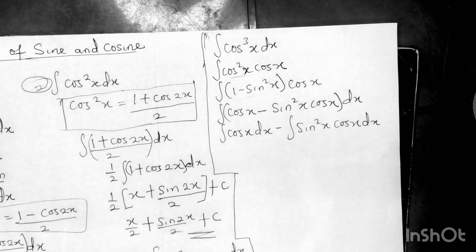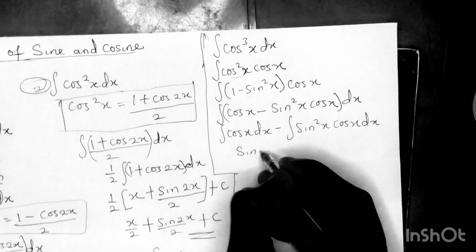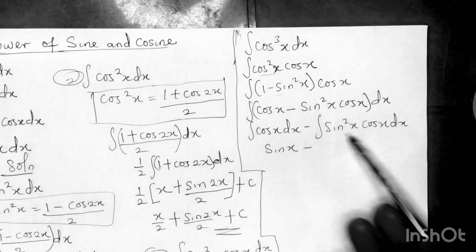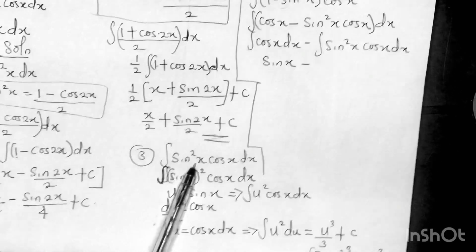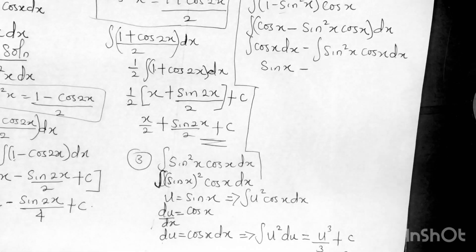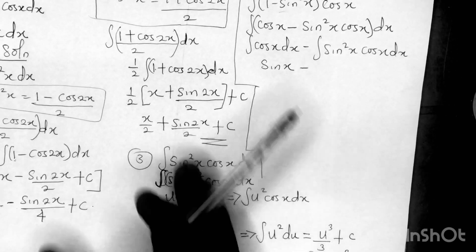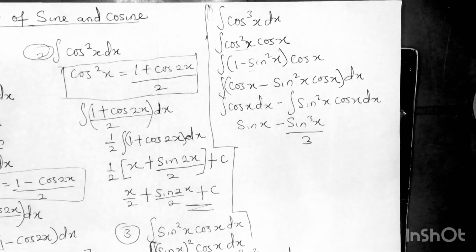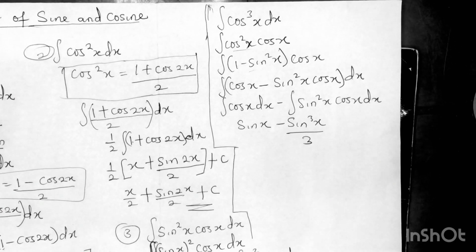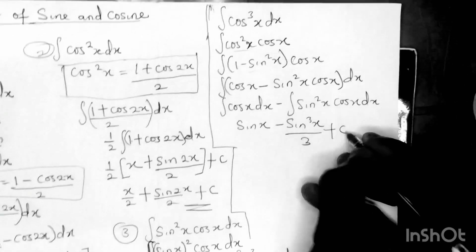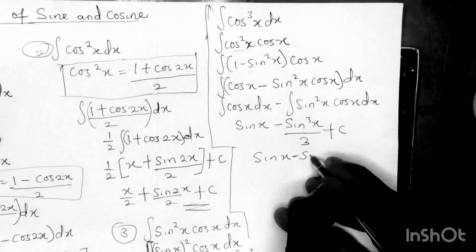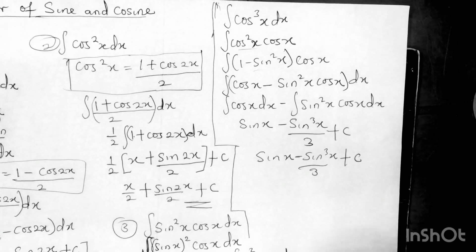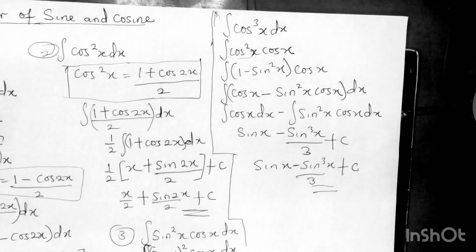We integrate each part separately. The integral of cos x gives sin x. For the integral of sin²x times cos x, we already solved this in Example 3 — the answer is sin³x over 3. So the full result is sin x minus sin³x over 3, plus C.